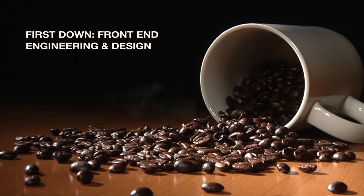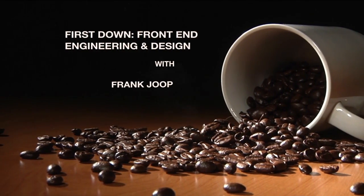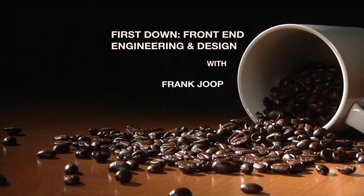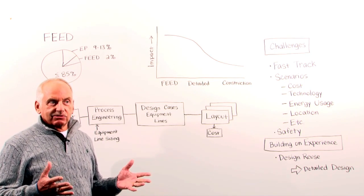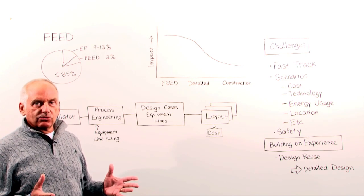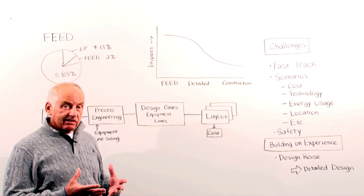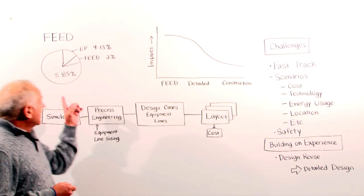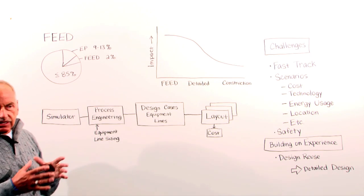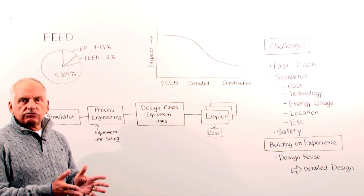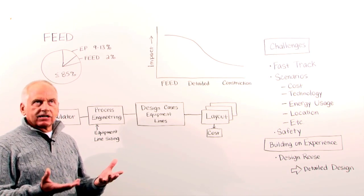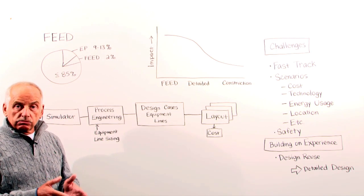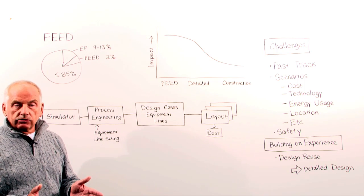The first down is important strategically in a football game, but it's also important in engineering. With first down, I mean the front-end engineering part of the project. If you look at the pie chart here, you see that the money and hours spent in the engineering office is relatively small to the total capex investment—maybe between 9 and 30 percent. You see an even smaller part is the FEED, the front-end engineering and design, or front-loading as some people call it.